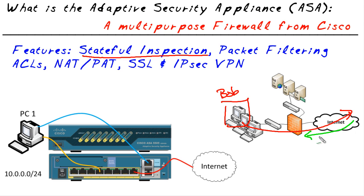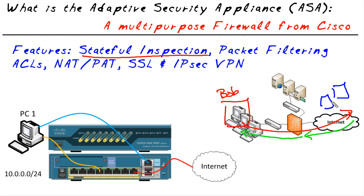When the reply came back, the firewall said: this reply is perfect — it exactly matches what Bob is expecting — and it dynamically makes an exception and lets that return traffic come back in. That way we can have tens of thousands of users going out to the internet, dynamically allowing all the return traffic, while at the same time stopping any traffic initiated from the outside from coming in. That is stateful inspection, and the ASA does it terrifically well.